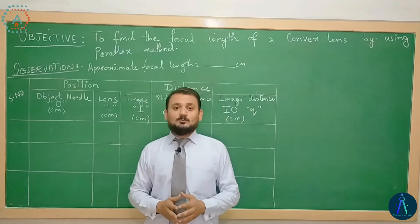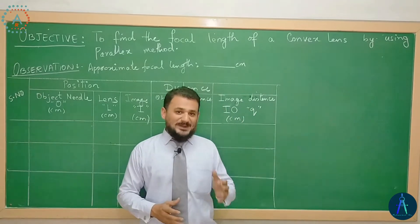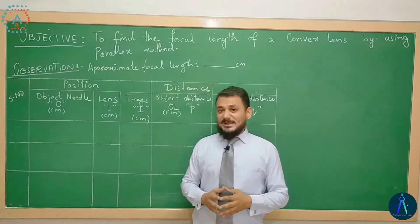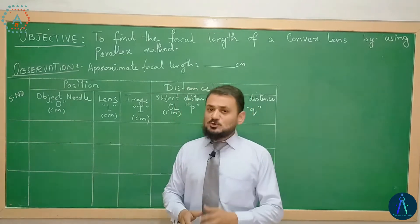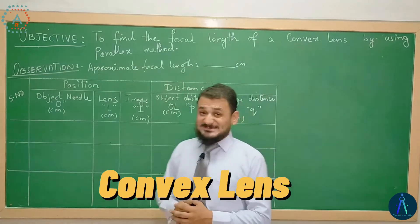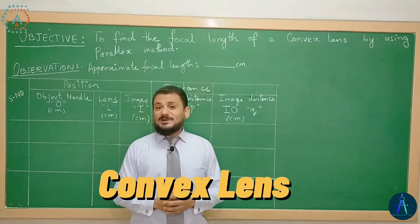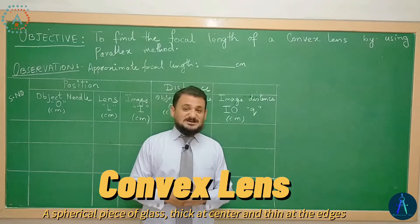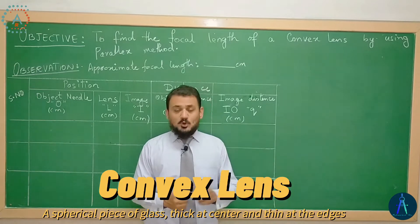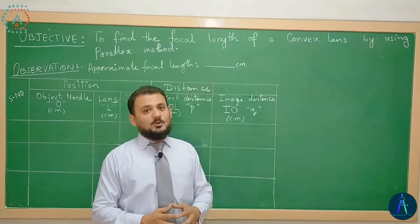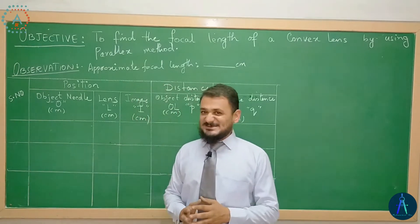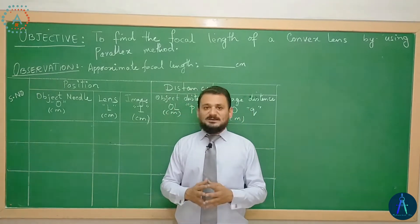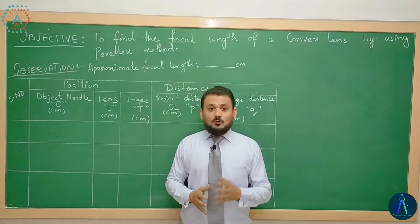Parallax method سے ہم اپنی performance میں دیکھیں گے کہ parallax method کیا ہوتا ہے۔ اس سے پہلے ہم دیکھ لیتے ہیں کہ what is our convex lens. Lens ایک transparent piece of glass ہے جس کا center part موٹا ہو اور جو edges ہیں وہ thin ہو تو ایسا lens convex lens کہلاتا ہے۔